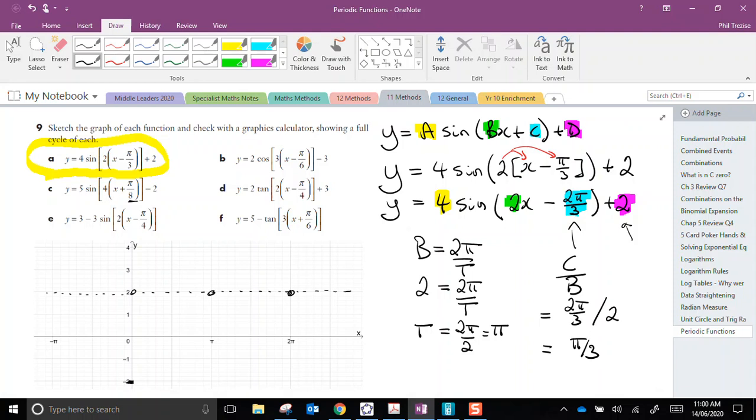I'm going to sketch in my base function now. My base function would have to have a crest way up there, back to 0 at that point, a trough way down there, back to 0 at that point.